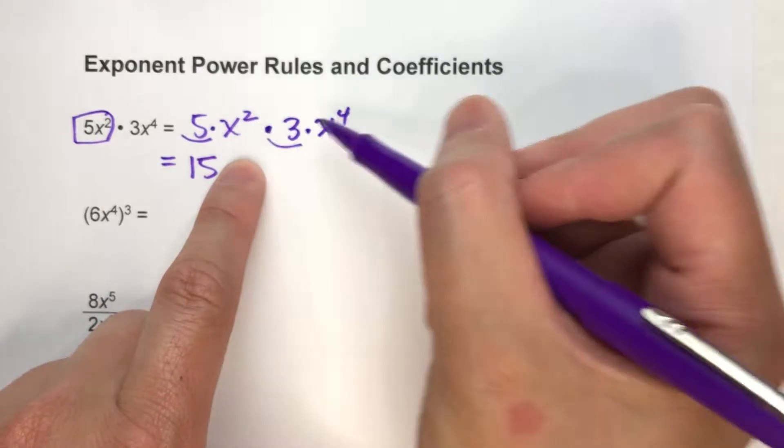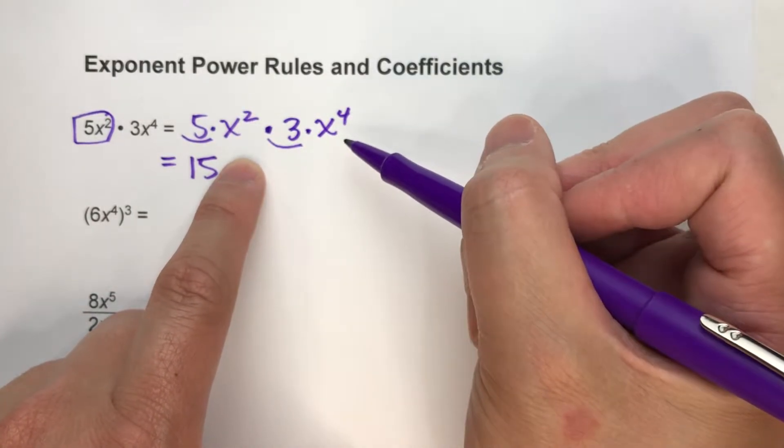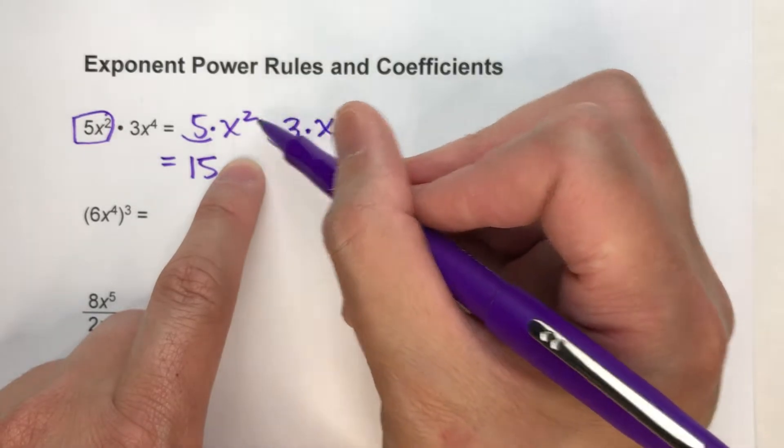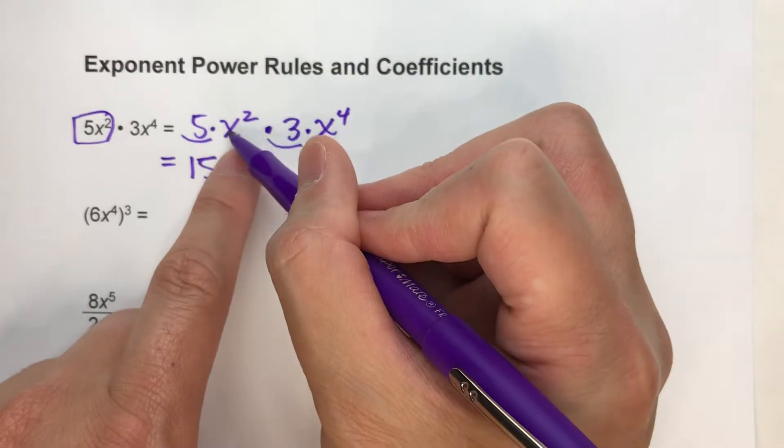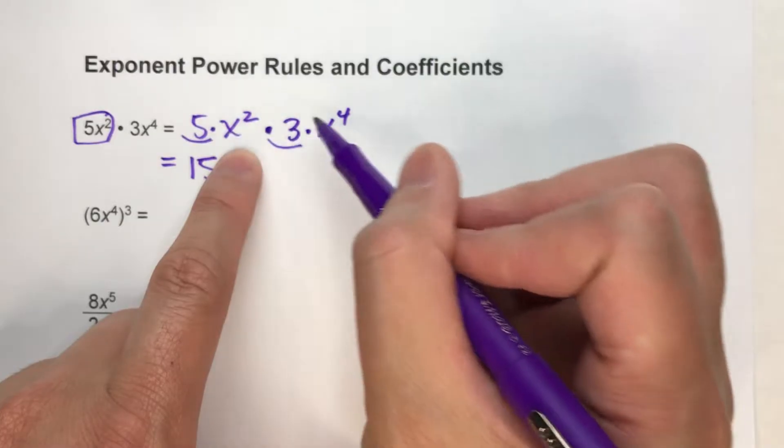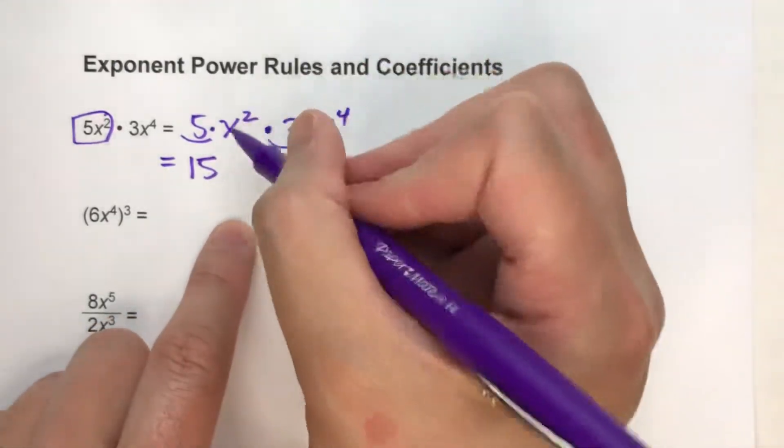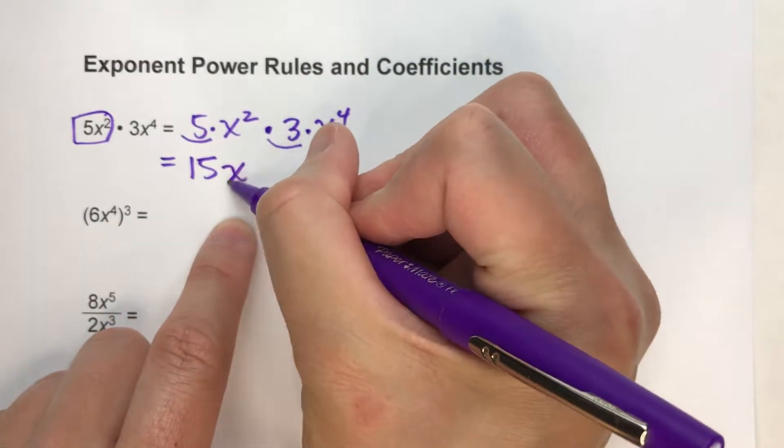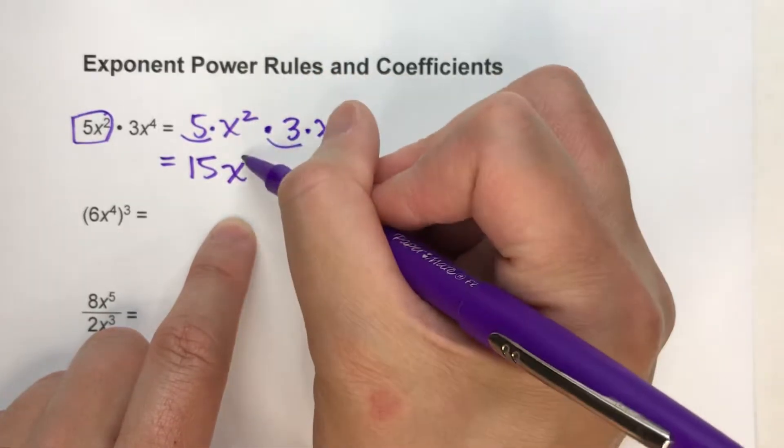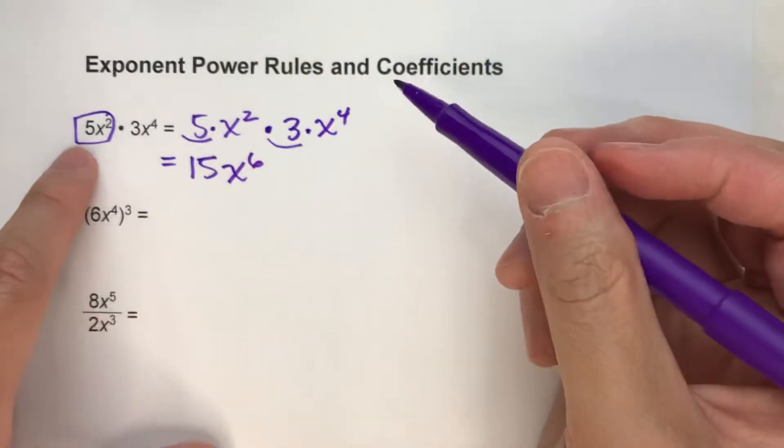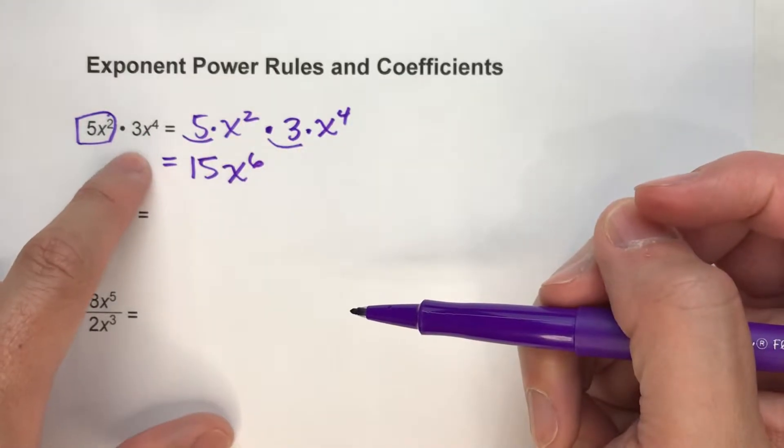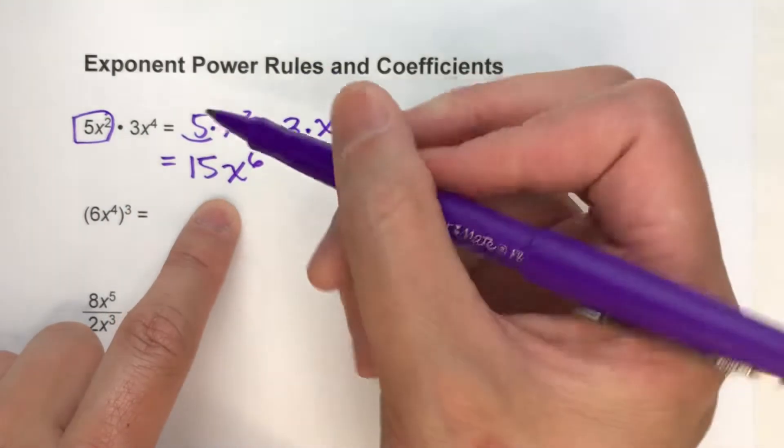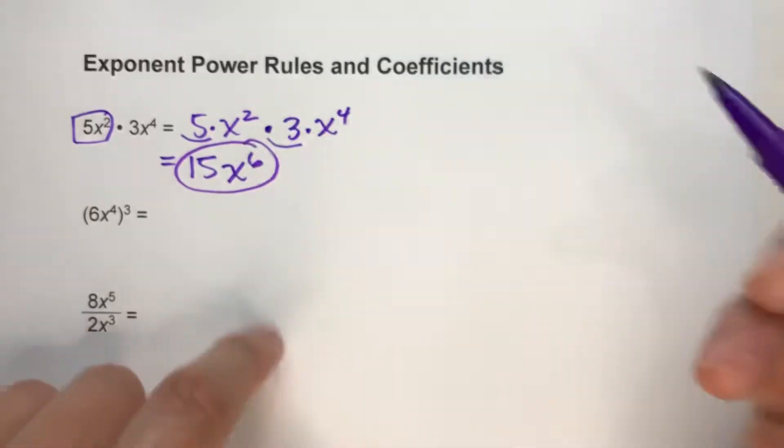But when I multiply x squared times x to the fourth, I have to use the power rules to multiply those out. And the power rule for multiplying powers with the same base is you keep the base and you add the exponents. 2 plus 4 is 6. So 5x squared times 3x to the fourth equals 15x to the sixth.